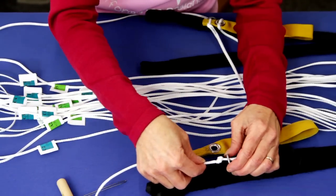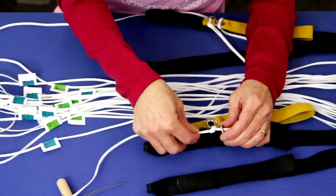Then run the knotted end of the line through the guide ring and then through the toggle grommet as shown.